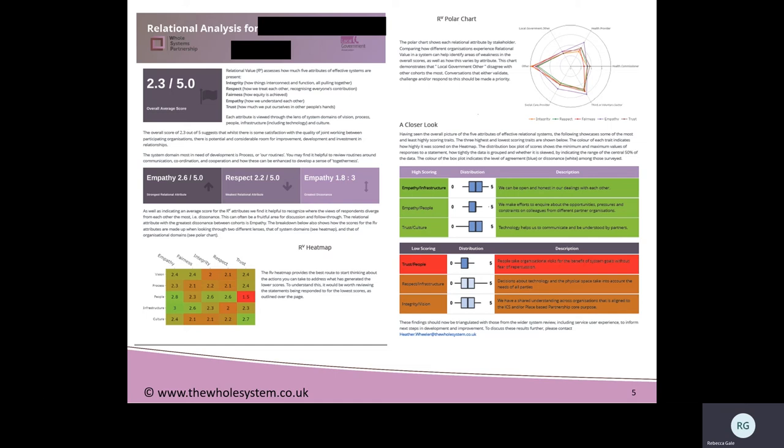Here you have the overall average score, which is 2.5 out of five, so there are some areas for improvement. The report identifies the strongest attribute, which is empathy, the weakest, which is around respect, and the one where there was the most dissonance or lack of agreement, which was empathy. You then have a heat map at the bottom left to helpfully draw the eye, with red being the weakest, working through brown up to bright green for the strongest.